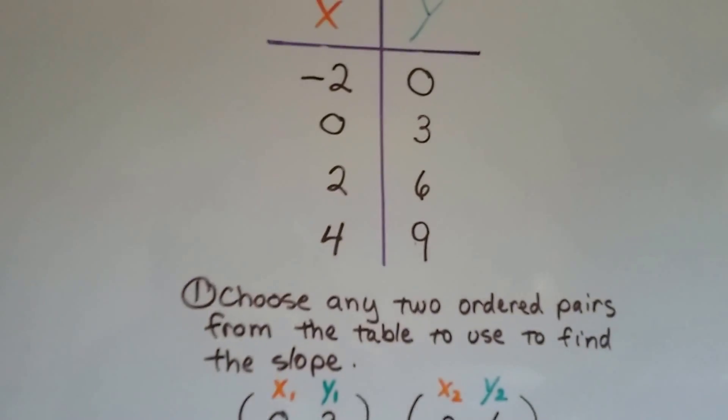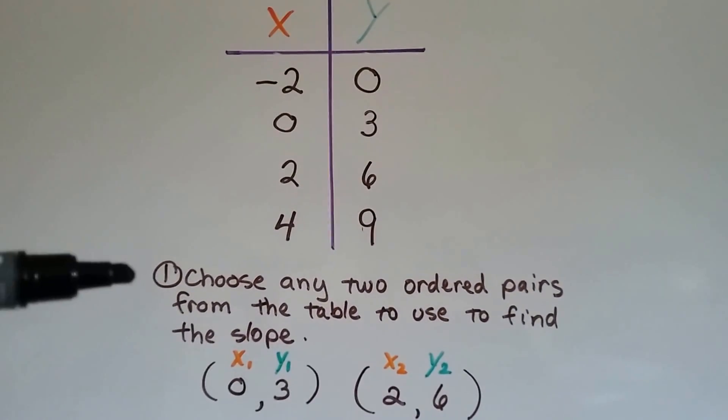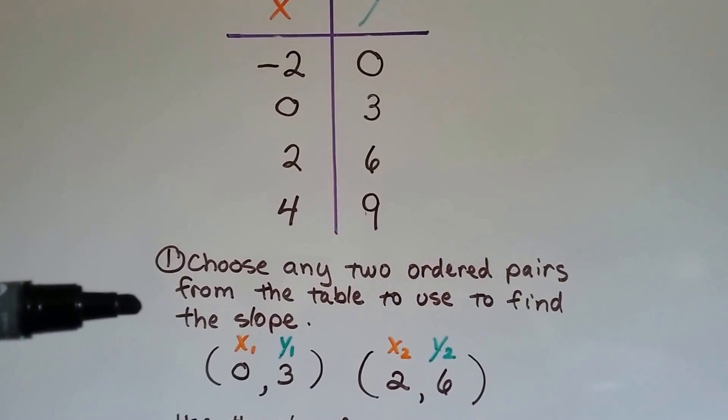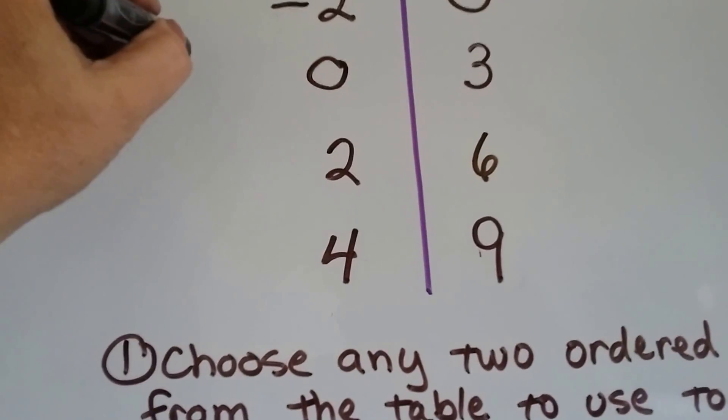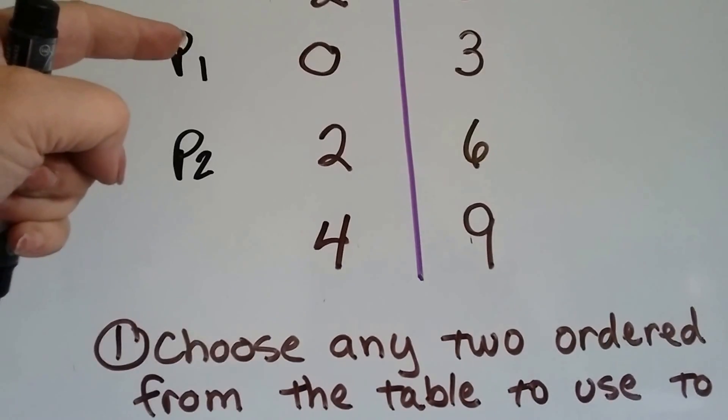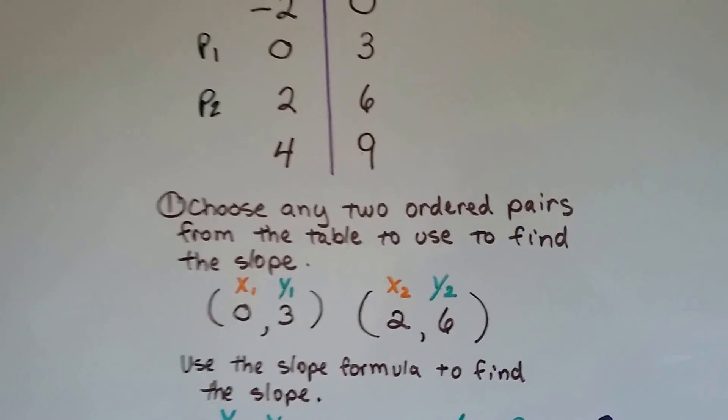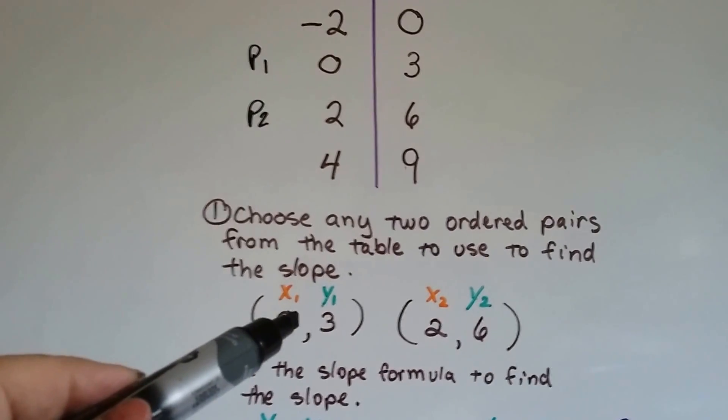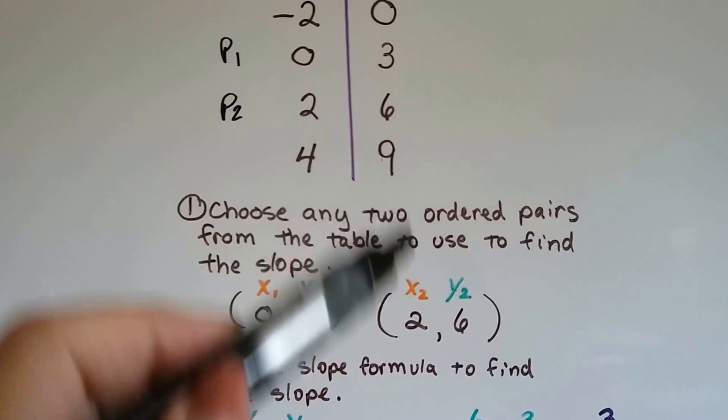Now our table is going vertically, and these are our x values, these are our y values. So we're going to choose any two ordered pairs from the table to use to find the slope. So I chose this as point 1, and this is point 2. So that's going to be our x1y1, and this is going to be our x2y2 for the slope formula. So here's our x1y1, 0, 3, and our x2y2 is 2, 6.